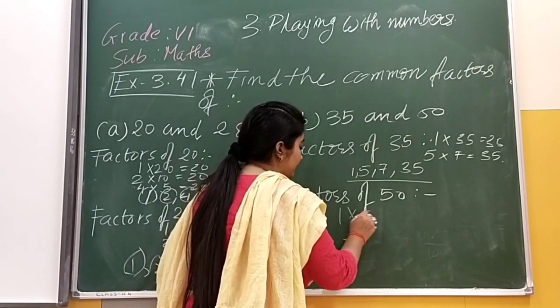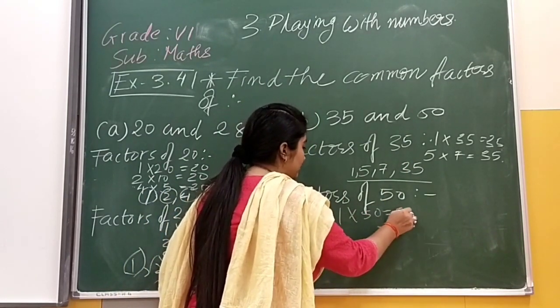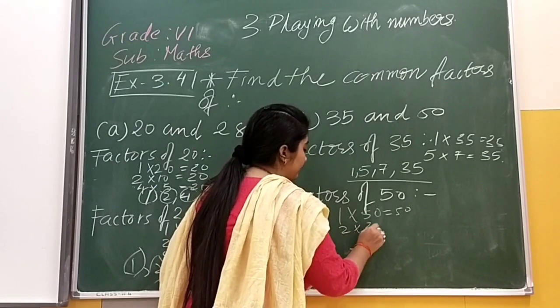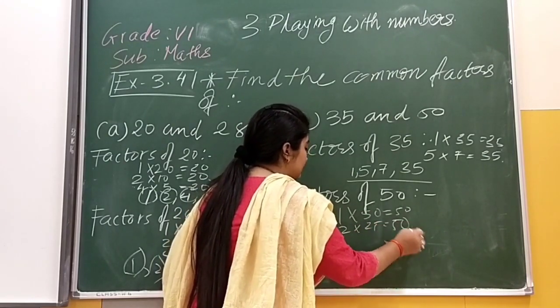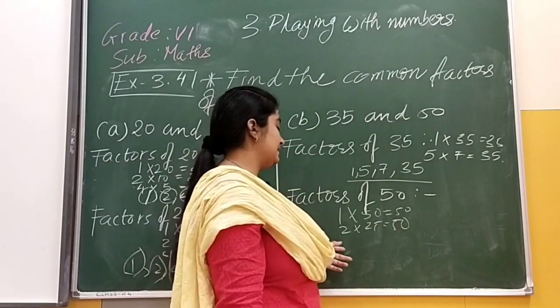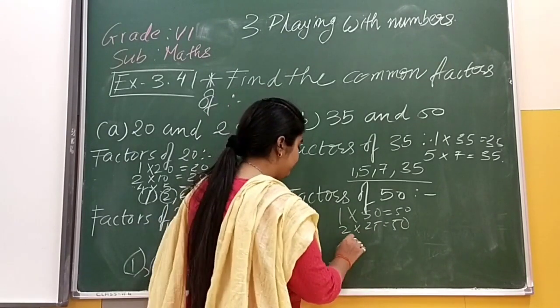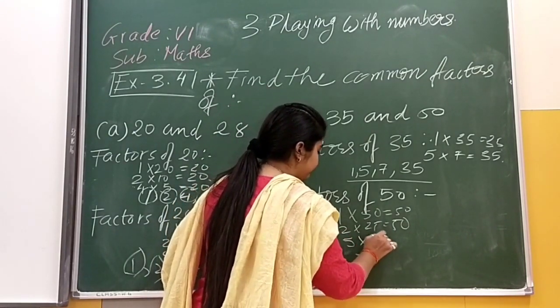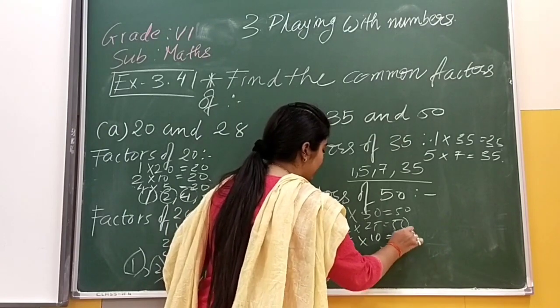The factors of 50 starting from 1, 1 into 50 is 50. 2 into 25 is 50. 3 cannot be able to find. 4 cannot be able to find. 5 into 10 is 50.